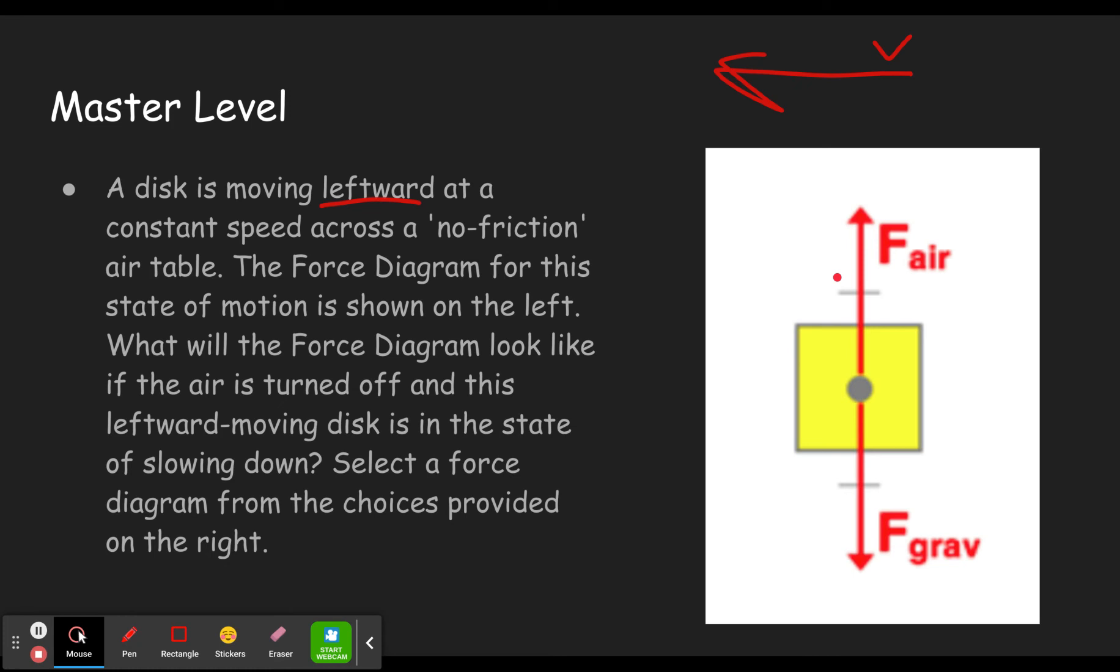What will the force diagram look like if the air is turned off? So if the air is turned off, we'll no longer have a force of air resistance pushing up. And this leftward moving disk is in a state of slowing down. If you've ever had an air hockey puck going across an air hockey table without the air on, it slows down fairly quickly. Select a force diagram from the choices provided on the right. We're just going to draw the force diagram here.